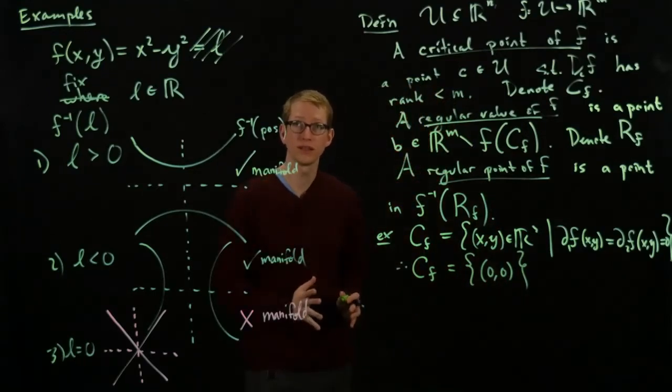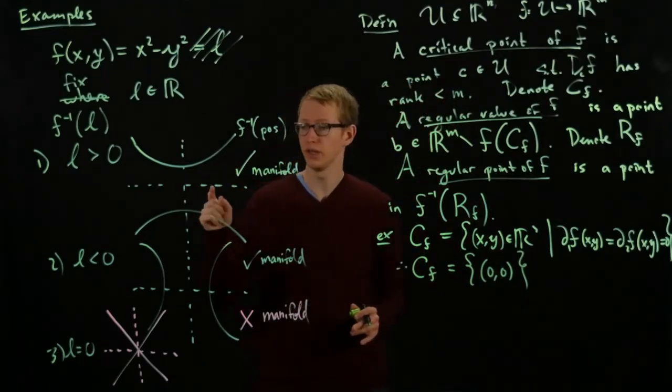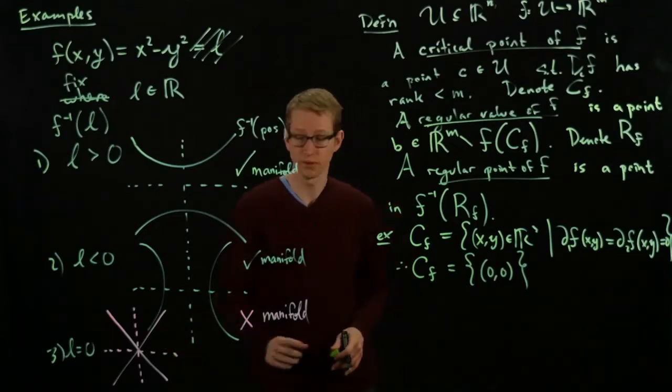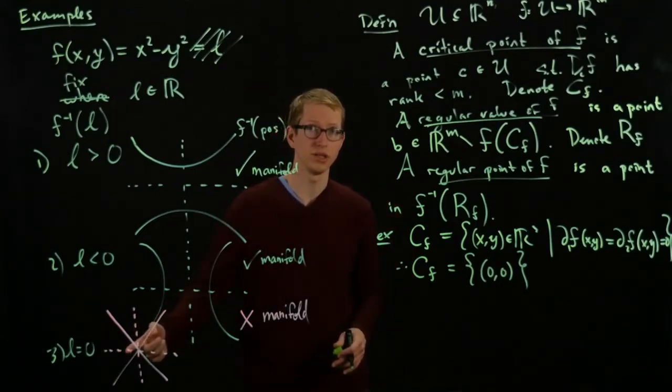So the set of critical points of this function in r2 is just the point 0, 0. And we can sort of see that there's going to be an issue here.